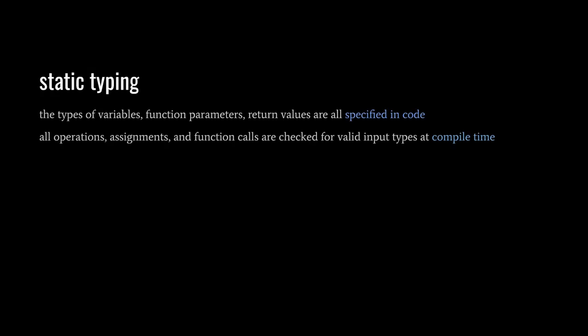Perhaps the most important design choice of a programming language is whether it should be statically typed. In a statically typed language, when you create a variable, you must decide what types of values it will store and label it as such. Likewise, you must decide what types of inputs and output each function should have. Having specified these types, the compiler will then enforce these constraints. For example, if you declare a variable to have type string, then assigning anything other than a string to the variable will trigger a compilation error. Likewise, if you declare a function to take as input a string and a number, then calling that function with any arguments other than a string and then a number will trigger a compilation error. The built-in operations are also checked at compile time for valid inputs — a division operation with inputs that are not both numbers will also trigger a compilation error.